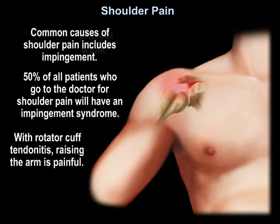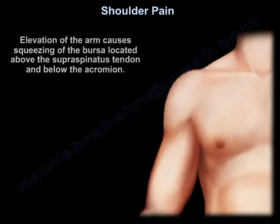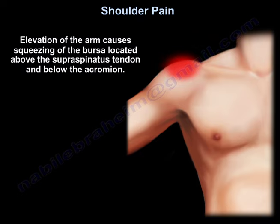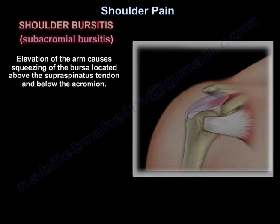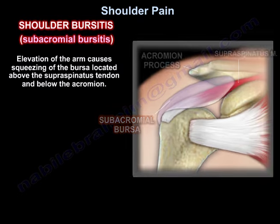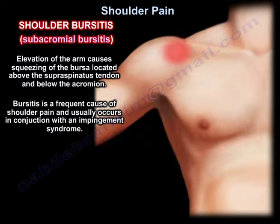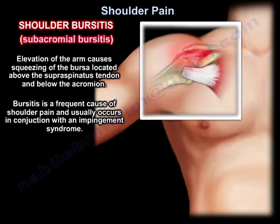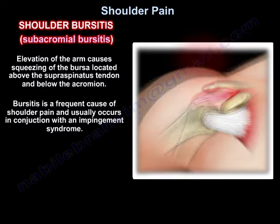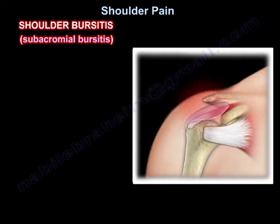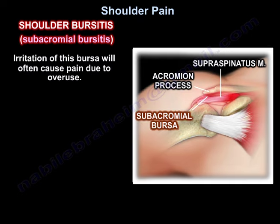With rotator cuff tendinitis, raising the arm is painful. Elevation of the arm causes the squeezing of the bursa located above the supraspinatus tendon and below the acromion. Bursitis is a frequent cause of shoulder pain and usually occurs in conjunction with an impingement syndrome. Irritation of this bursa will often cause pain due to overuse.